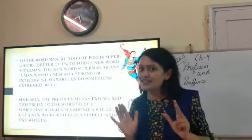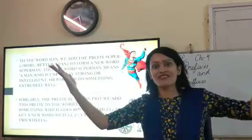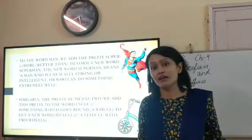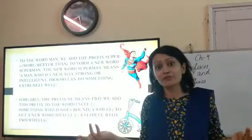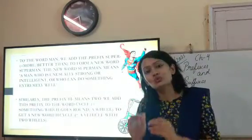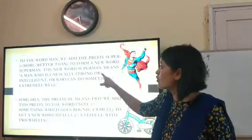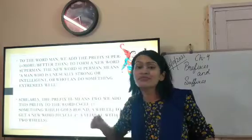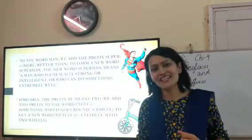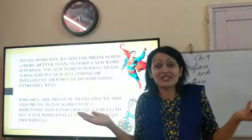Another example: to the word 'man', we add the prefix 'super', which means more or better than. So we form the word 'superman'. The new word 'superman' means a man who is unusually strong or intelligent, or who can do something extremely well — a man bestowed with ultimate strength and intelligence. Similarly, the prefix 'bi' means two. Adding it to the word 'cycle' gives us 'bicycle', meaning a vehicle with two wheels.